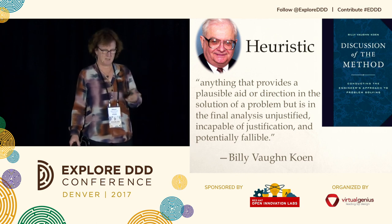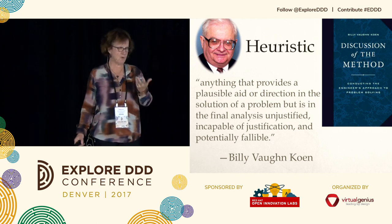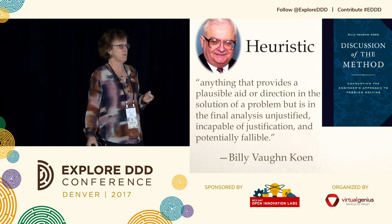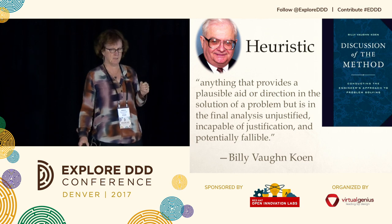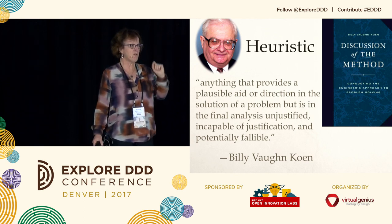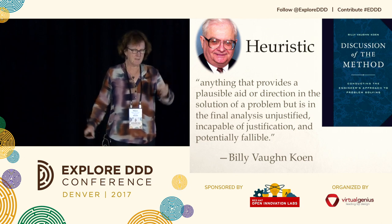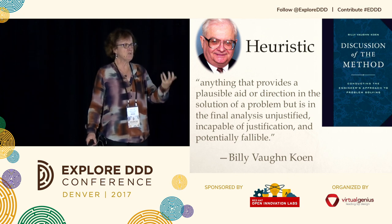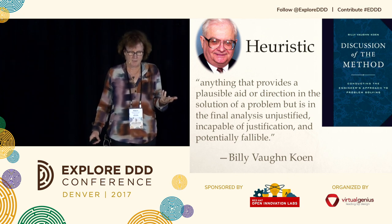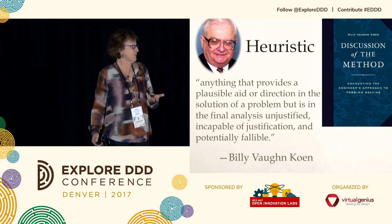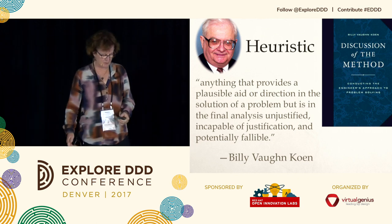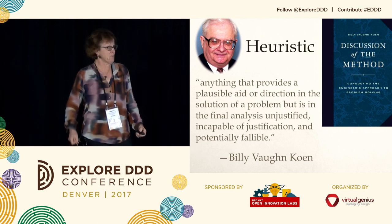One of the things he says in his book — more of a philosophy book than anything else — is that a heuristic is anything that provides a plausible aid, but it's not guaranteed, and you can't really justify it. It's what you do at the point in time that you apply it, and it might not work. But you do it anyway. That's coming from a guy who designed nuclear reactors.